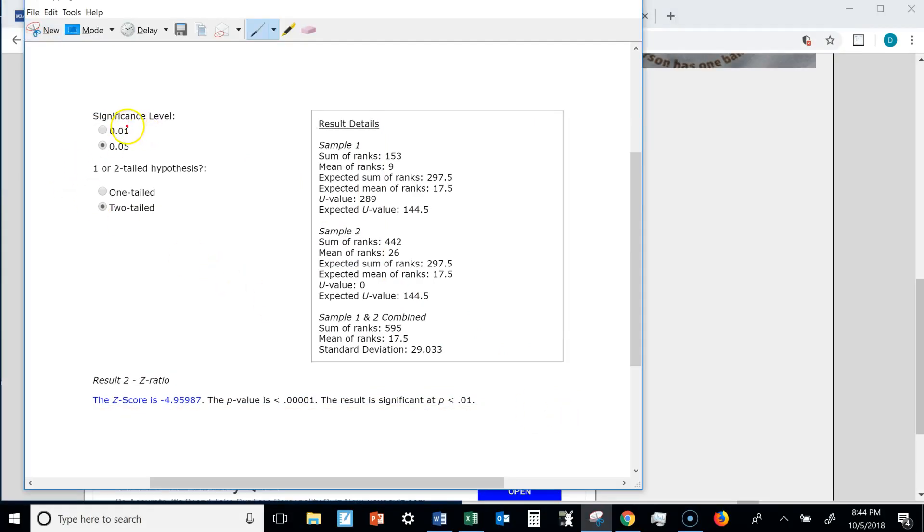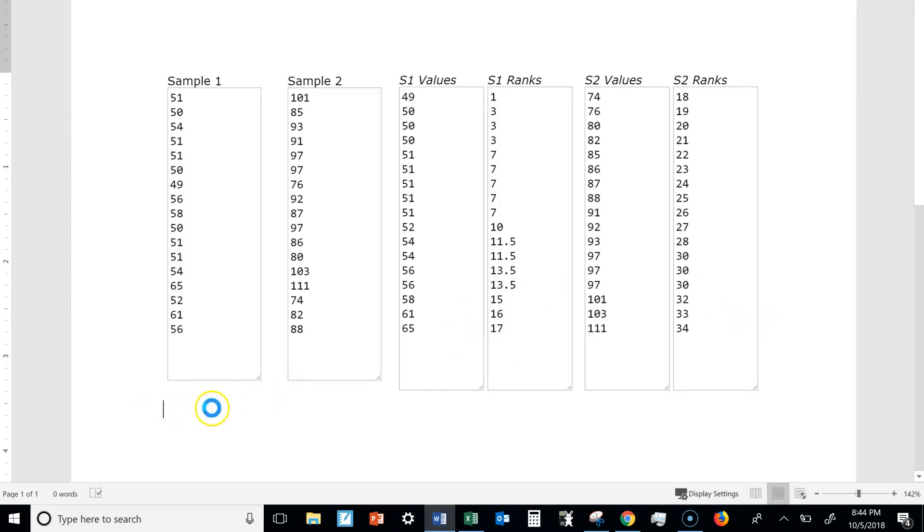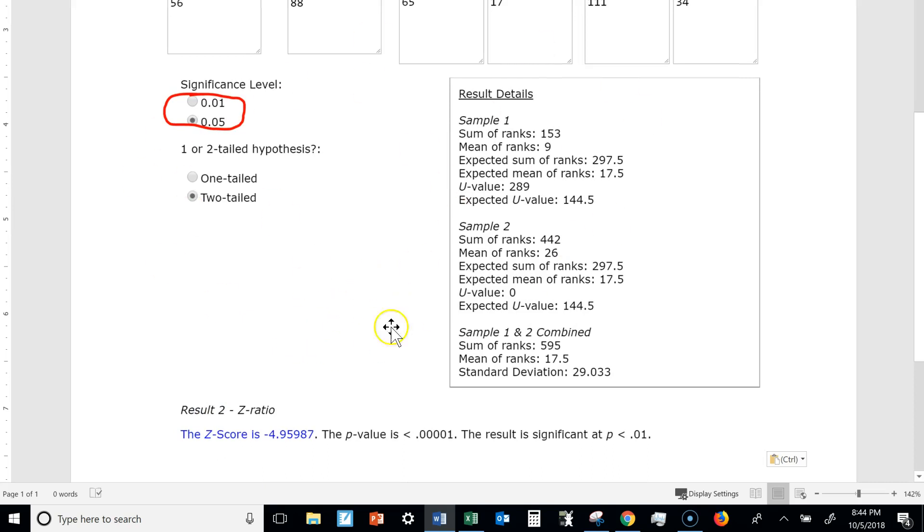But again, be sure to change this back to what you actually selected. Next, you can edit, copy, or Control-C with your keyboard. Go back into Word, and Control-V or right-click, paste. And there it is.